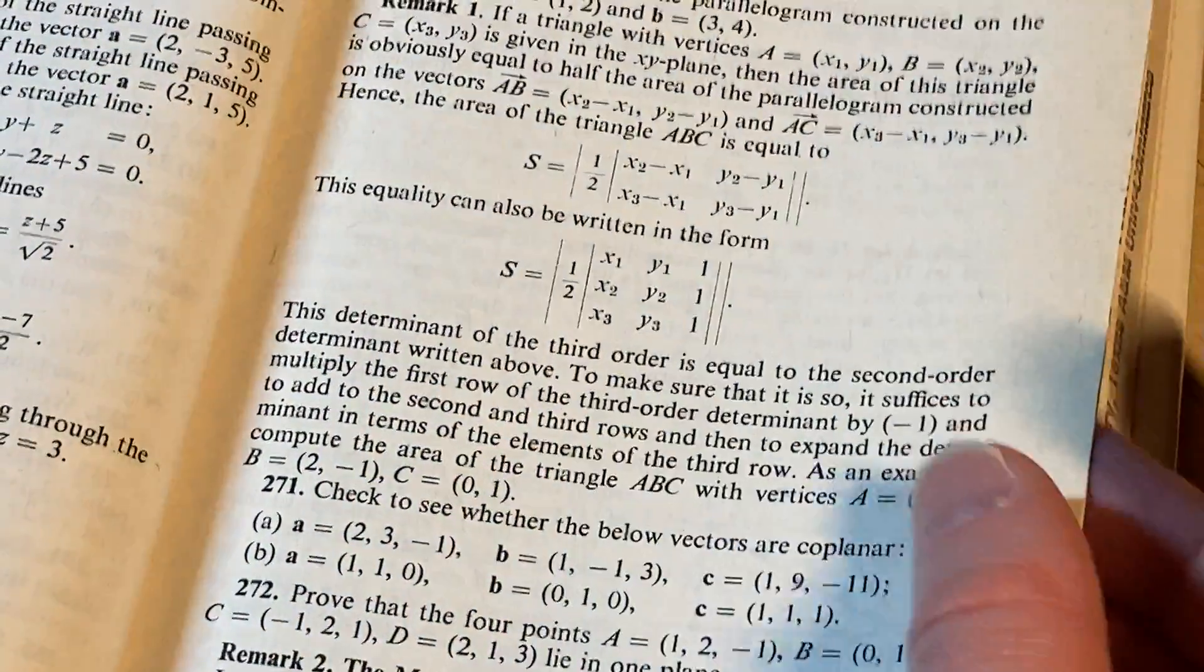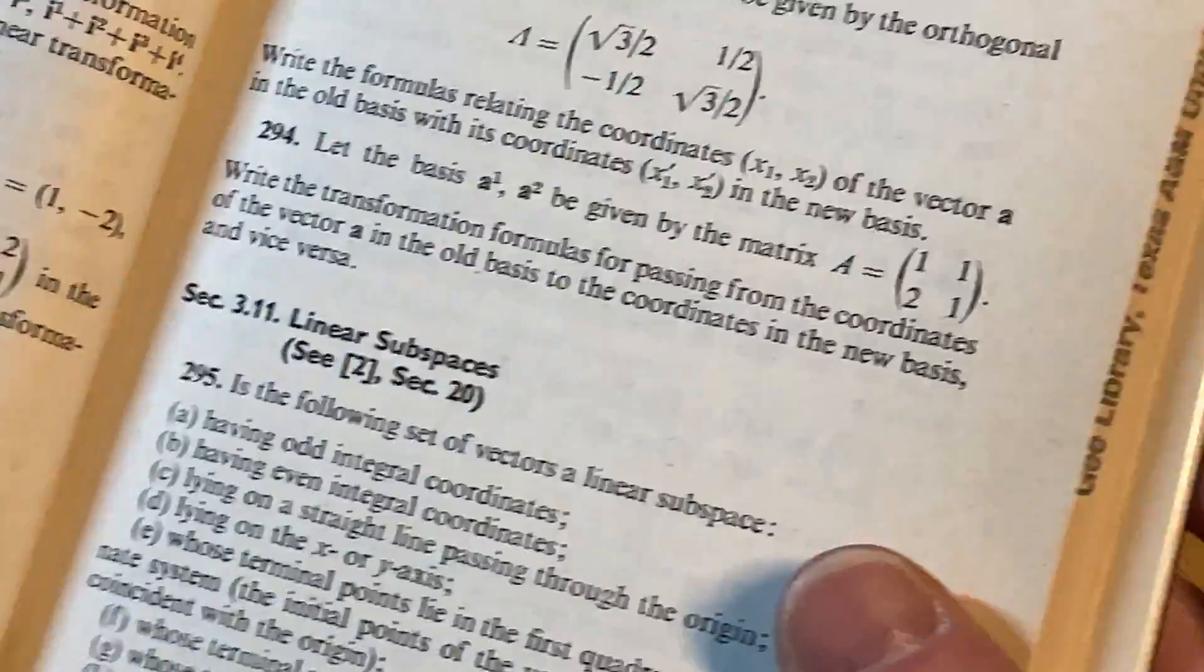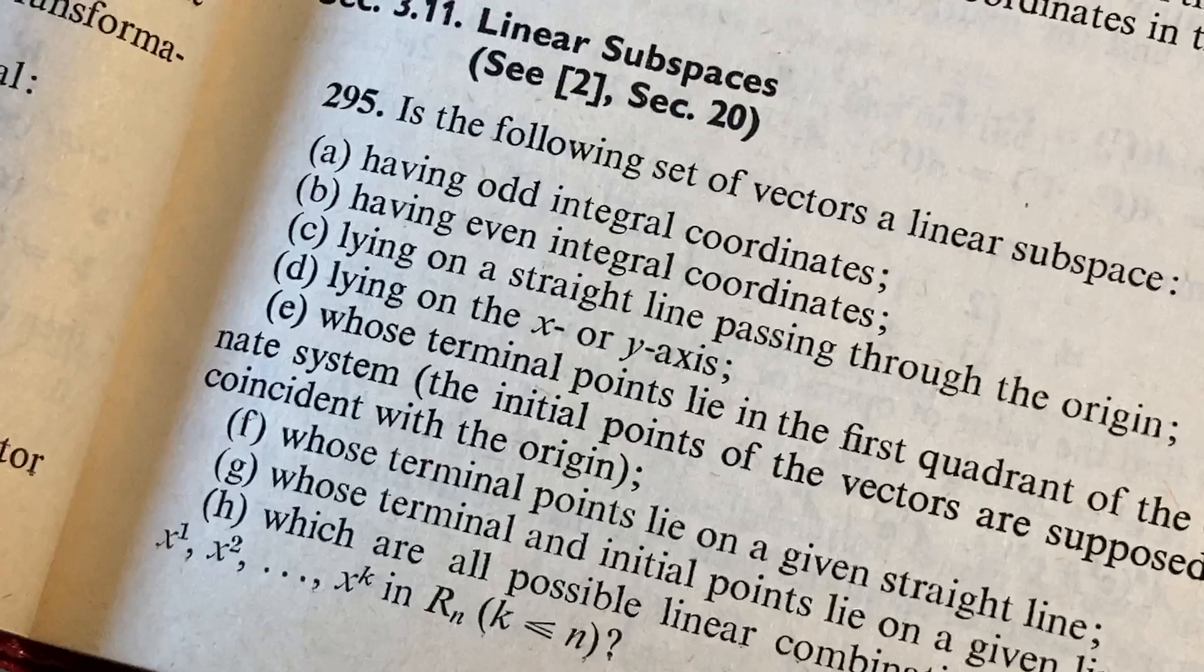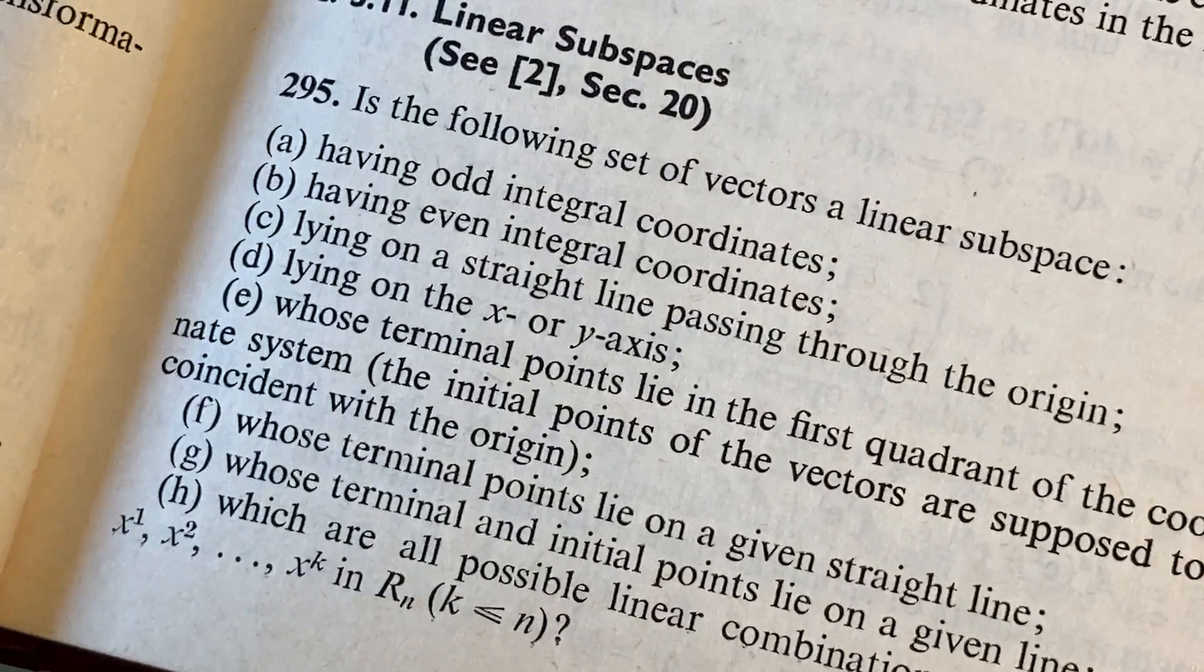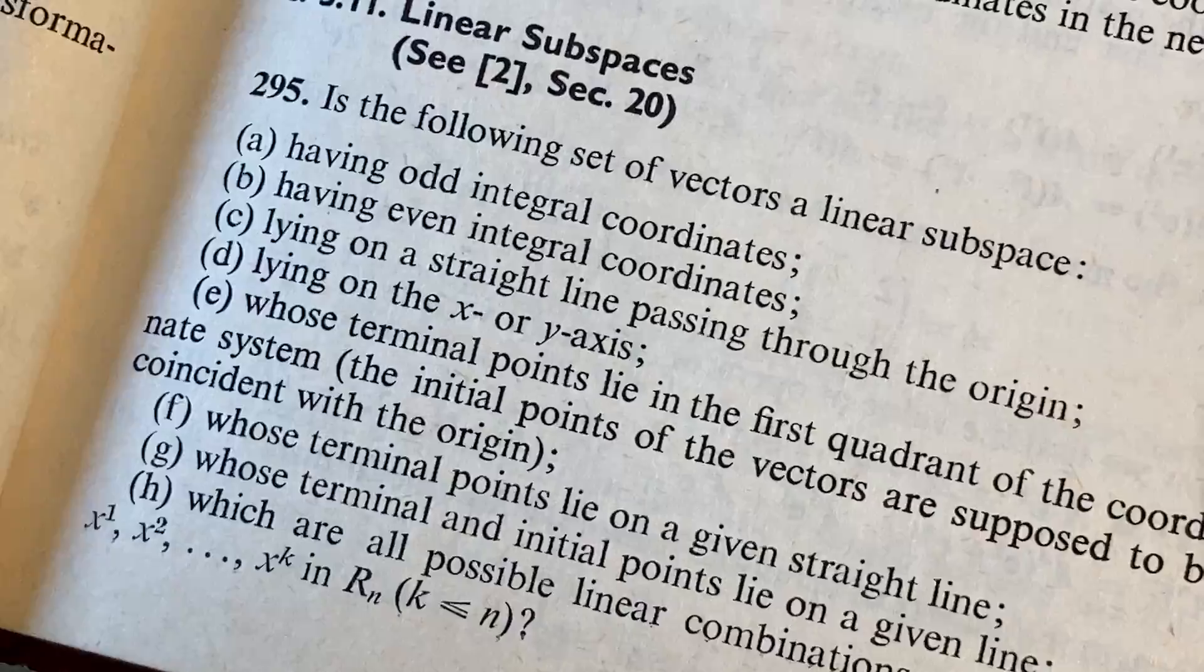Pretty cool problems, right? You can have a lot of fun with this stuff. Linear subspaces: is the following set of vectors a linear subspace having odd integral coordinates, having even integral coordinates. Interesting.